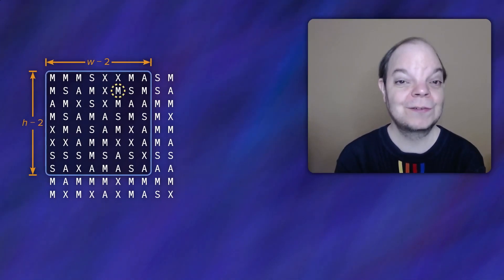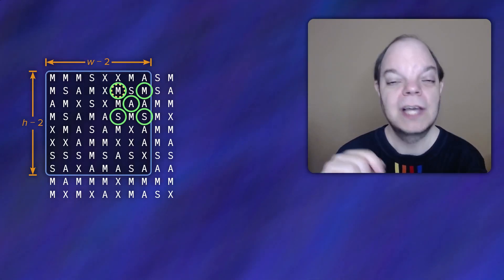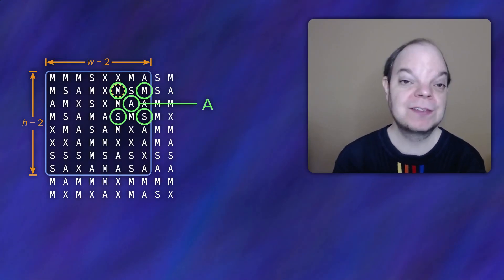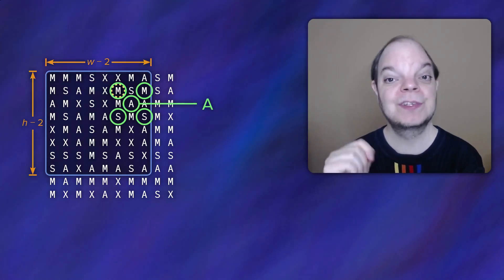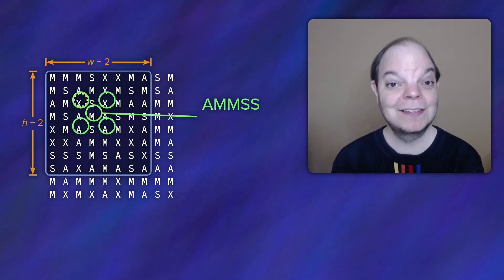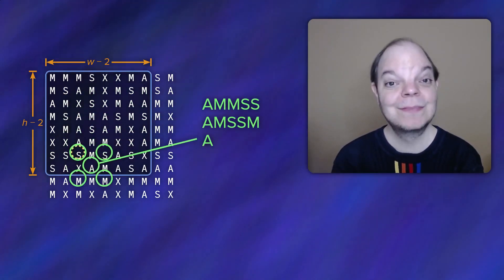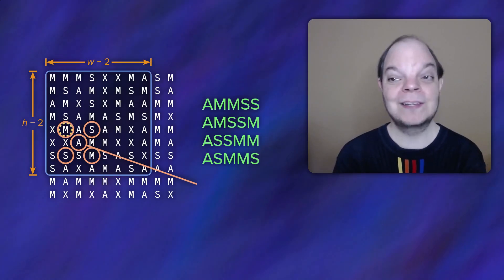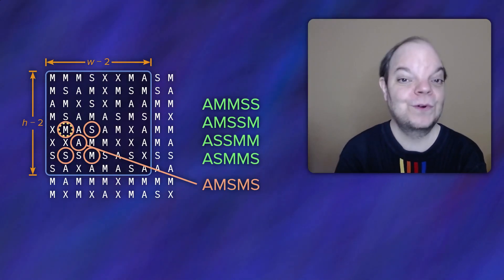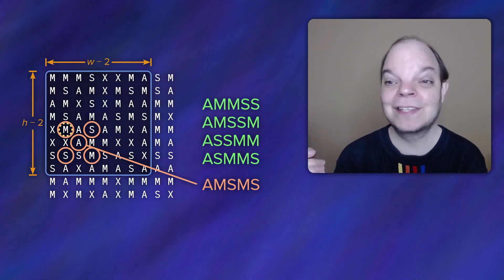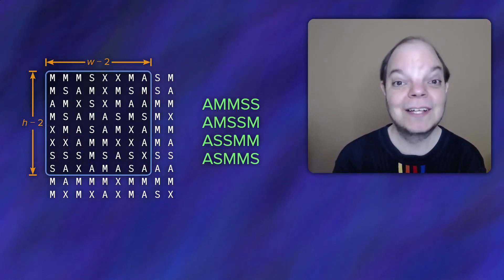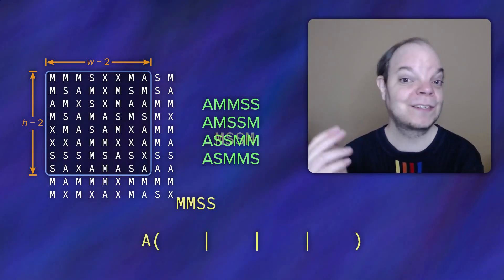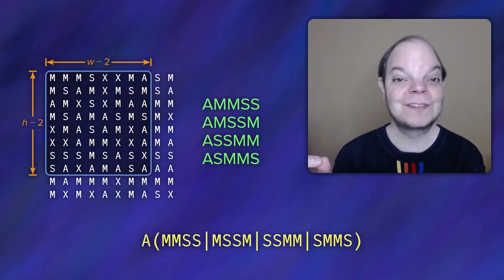For each such position in the grid, we can look at these five values. The middle one we always want to be an A. The other four need to be two M's and two S's, but only in four possible specific combinations: MMSS, MSSM, SSMM, and SMMS. If you have any other combination of two M's and two S's, for example MSMS, it won't form the word MAS — it'll instead be MAM and SAS, and we don't want that. So I'm going to generate these five-letter words from every grid position, then use a regular expression to determine it's one of the strings we're looking for.